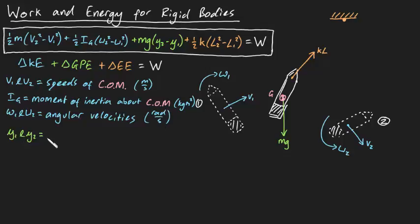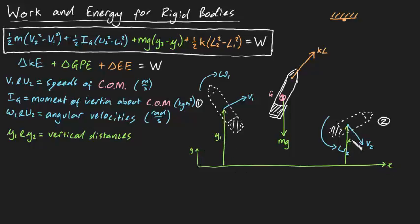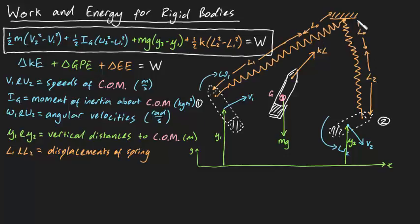Y1 and y2 are the vertical distances from any arbitrary axis to the center of mass of the pen at positions one and two in meters, and l1 and l2 are the displacements of the spring from equilibrium at positions one and two also in meters.